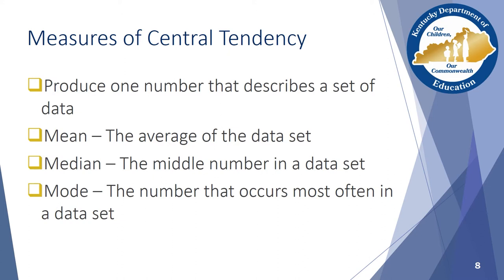Later in this webinar, we will discuss how the mean can be used to draw further conclusions about a body of data. The median represents the middle number in a distribution of scores. To find the median, the study author places the scores in ascending order from lowest to highest and then finds the middle. If there is no middle score, the average of the two center scores is calculated. In other words, the median represents a hinge point where half of the students scored higher and half scored lower.